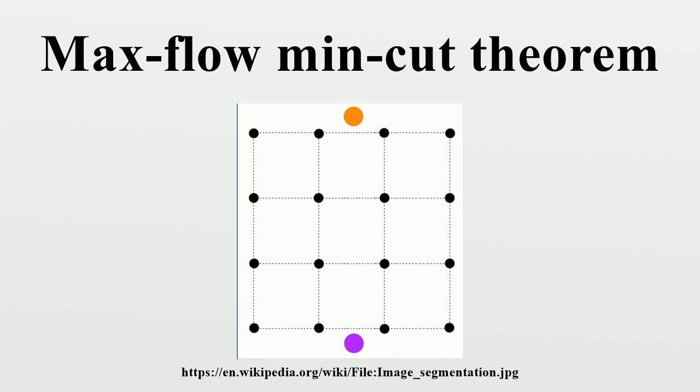Maximum flow problem: Maximize |F|, that is, to route as much flow as possible from S to T.